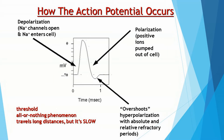Here is a diagram of the action potential. I'm showing you the voltage of the cell in millivolts as a function of time. Neural signals are fairly rapid, so we are looking at time in milliseconds, or thousandths of a second. Imagine that I have a microelectrode placed just outside the cell membrane and one just inside the cell membrane of the axon of a neuron, and I'm measuring changes in voltage over time. At time zero, when the cell is at rest, the voltage would read minus 70 millivolts.